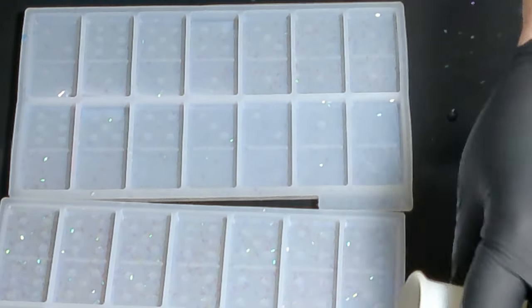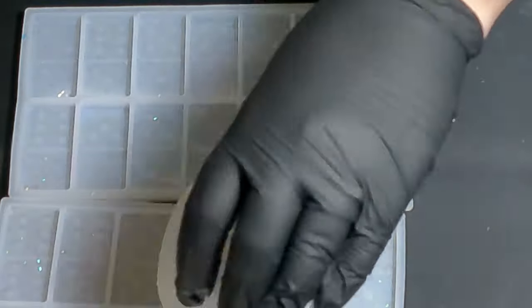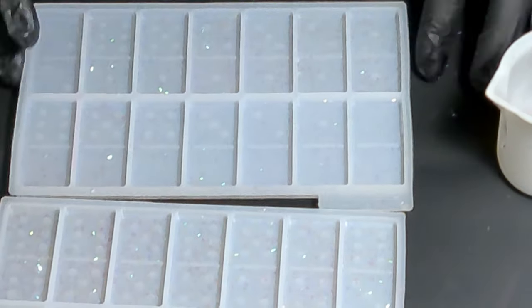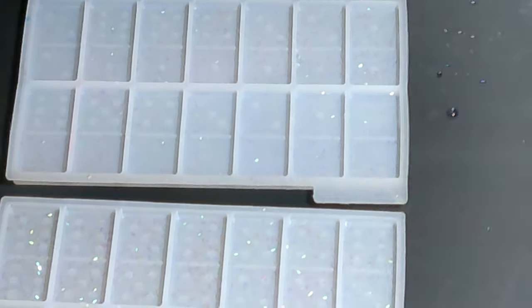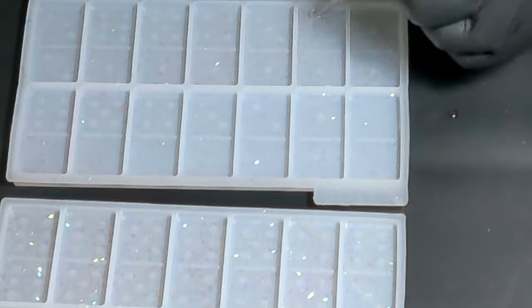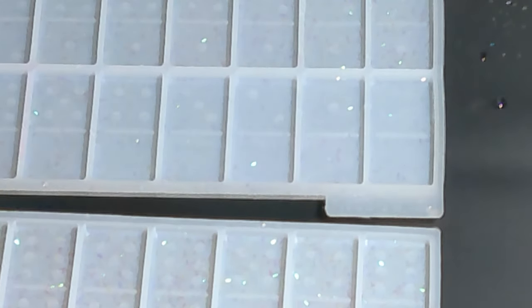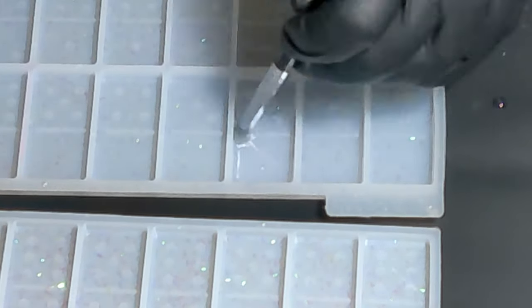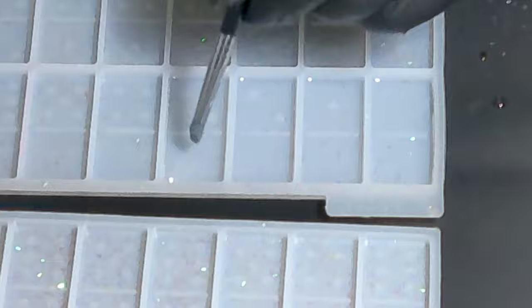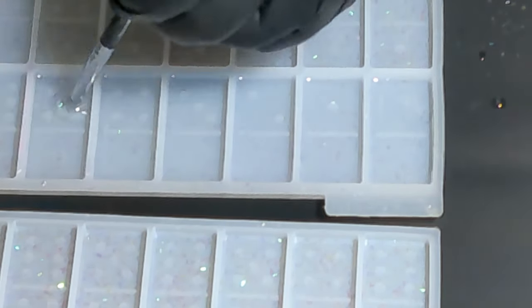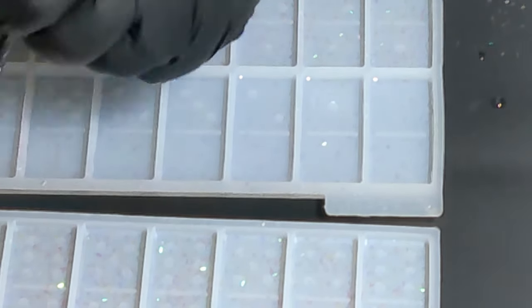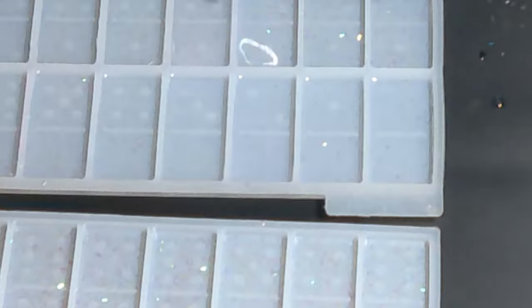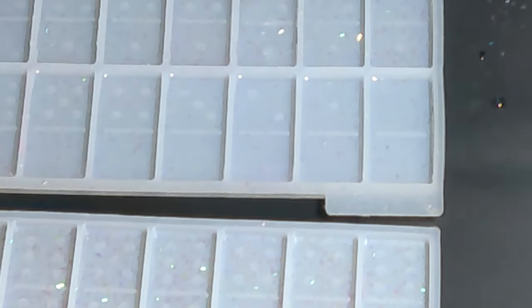If you've never made dominoes before, you do want to make sure after you pour your resin that you go through with a silicone tool or a dotting tool around the 90-degree angles and around all of the little dots and the middle line. Bubbles like to hang out in those areas, and it can give a sharp edge or ruin them. Take the time to do it - it'll make your project that much better in the end.